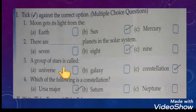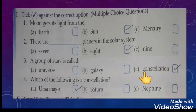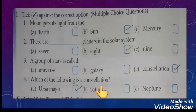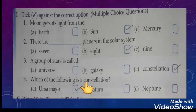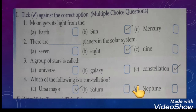Third question: a group of stars is called what — universe, galaxy, or constellation? A group of stars is called a constellation. Two constellation names are Orion the Great Hunter and Ursa Major the Great Bear. Now, which of the following is a constellation? Ursa Major is the constellation. Saturn and Neptune are the planets.